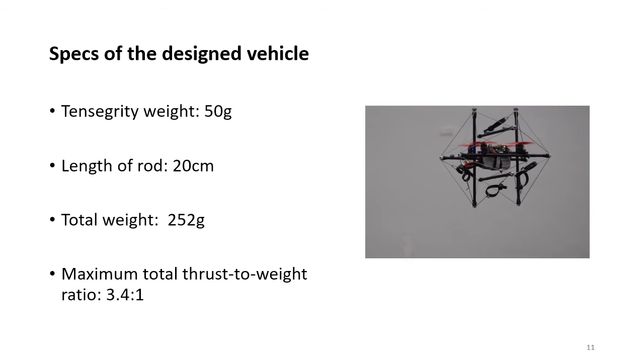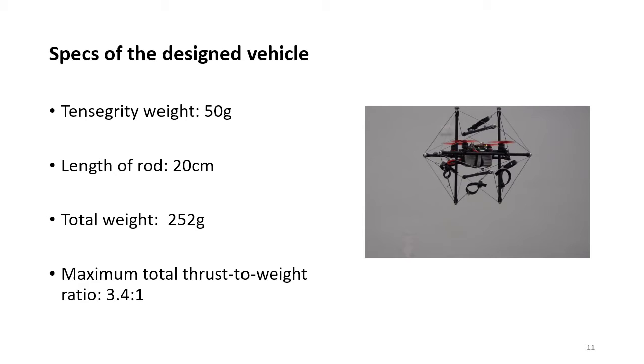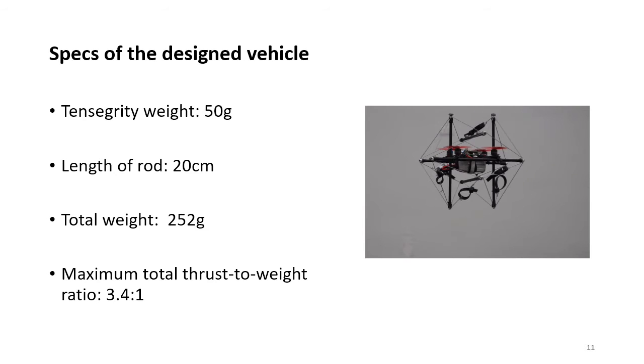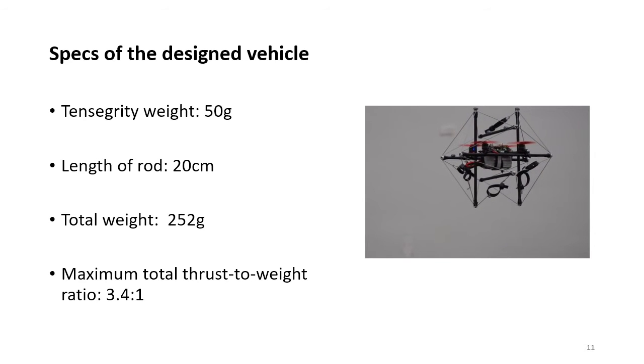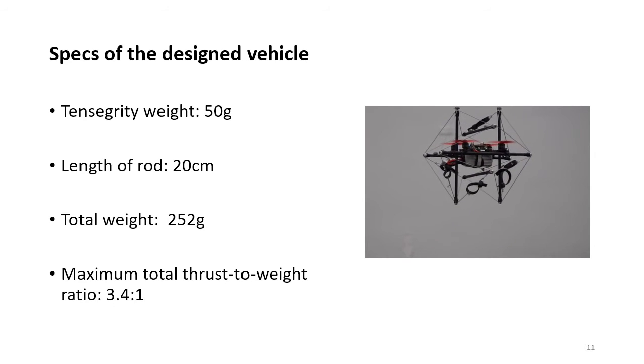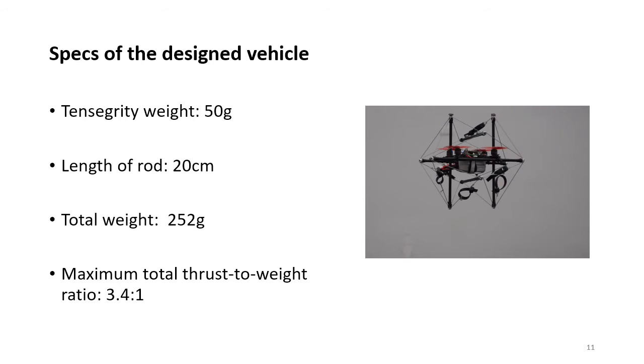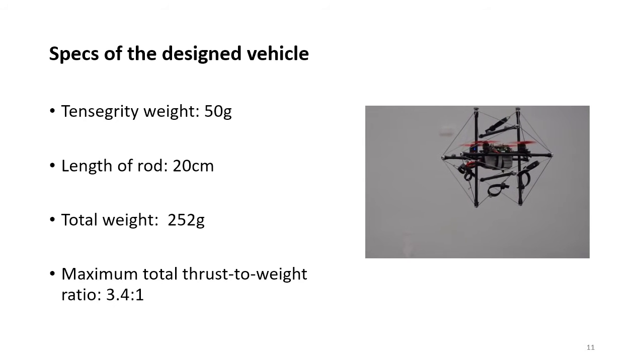The specs of the designed vehicle is as follows. The tensegrity weighs 50 grams, and the length of each rod in the structure is 20 centimeters. The total weight of the vehicle is 252 grams, and has a maximum total thrust-to-weight ratio of 3.4 to 1.